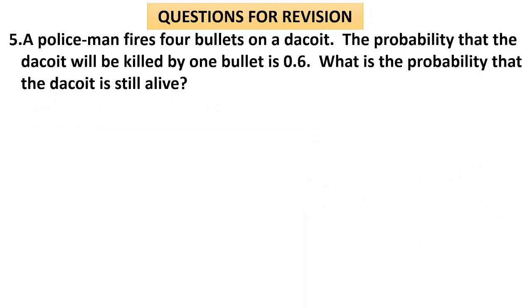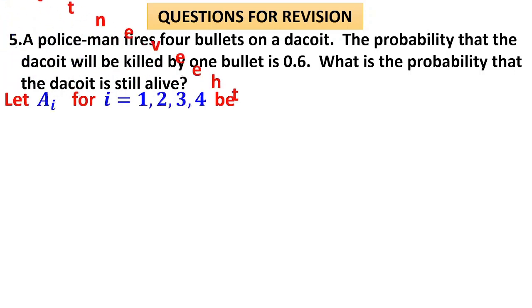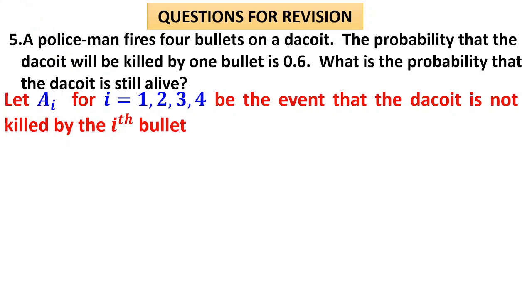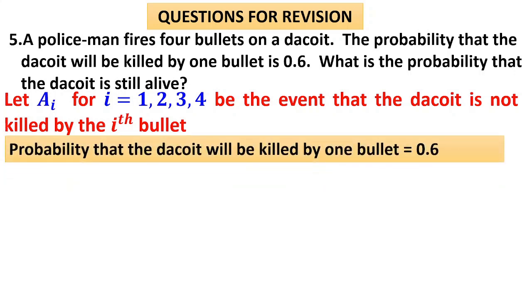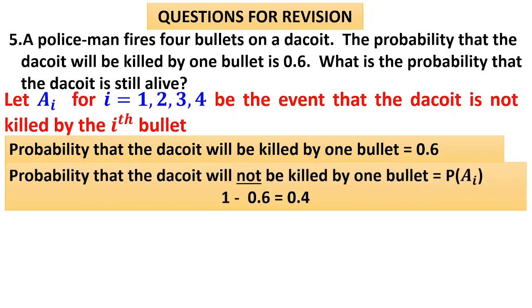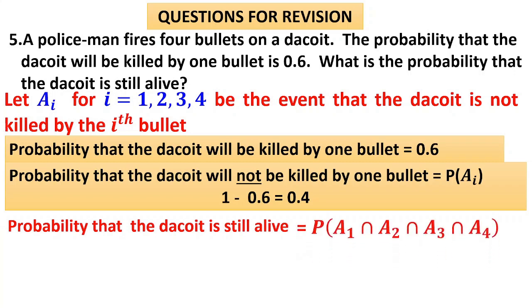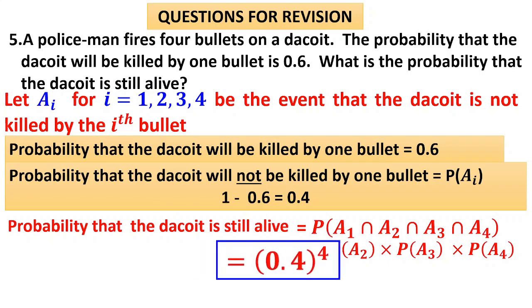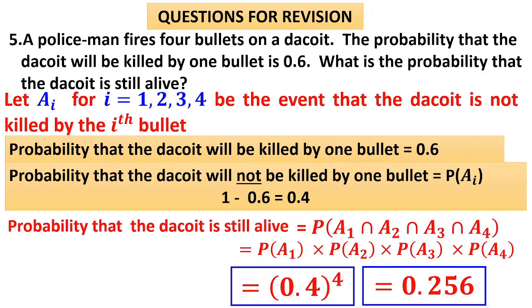Question 5: A policeman fires four bullets at a dacoit. The probability that the dacoit will be killed by one bullet is 0.6. What is the probability that the dacoit is still alive? When firing four bullets one after the other, they are all independent events. Let A1, A2, A3, A4 be the events that the dacoit is not killed by each bullet. The probability of being killed is 0.6, so the probability of not being killed is 1 − 0.6 = 0.4. The probability that the dacoit is still alive — not killed by any of the four bullets — is A1 intersection A2 intersection A3 intersection A4 = (0.4) to the power four = 0.0256. Be careful: the question asks for 'still alive,' so we need the negation of being killed.